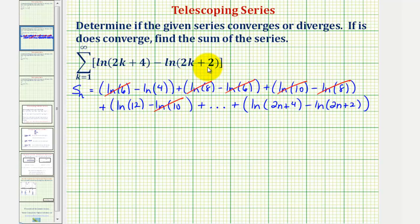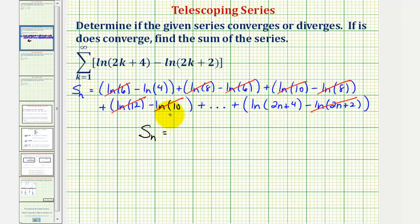Recognizing this pattern, if we continue simplifying the partial sum of the first n terms, only the first term in the last group remains — everything else simplifies out. Therefore, the simplified formula for the partial sum S sub n is equal to negative natural log four plus natural log of the quantity (2n+4).